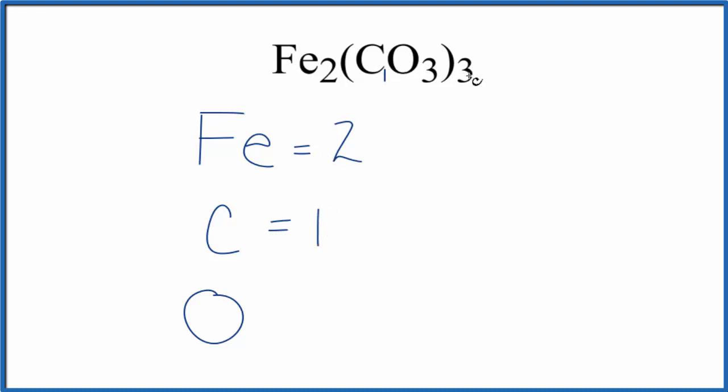One carbon in this parentheses here times the three. This three applies to everything in the parentheses, so one times three means we have three carbon atoms. Then oxygen, we have the three here times this three...